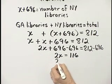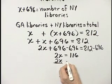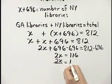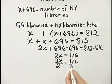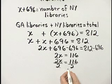And then we finish solving by dividing both sides by the coefficient of the variable, which in this case is 2. And 116 divided by 2, that is then 58.